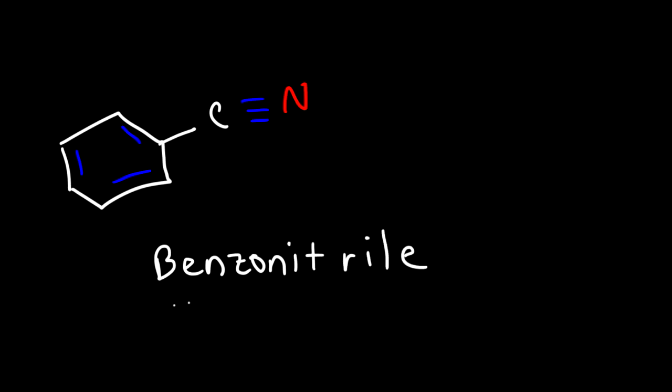Now what if we have a benzene ring and a nitrile functional group? What's the name of this molecule? This is simply called benzoyl nitrile. It's also called benzene carbonitrile. So those are the ways you can name this molecule.